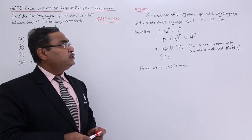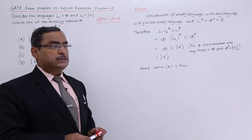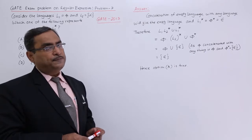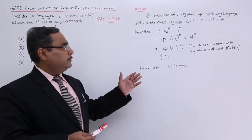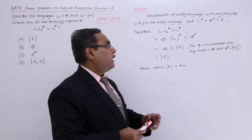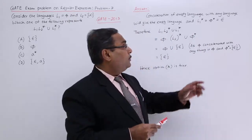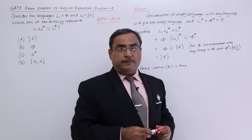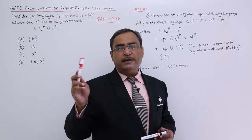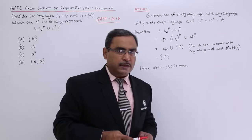Concatenation of empty language with any language will give you the empty language. That means L1 star is equal to phi star is equal to epsilon. In some other cases, we usually consider this epsilon as lambda, that is null. L1 star - what is L1? L1 is phi. What about L1 star? That is phi star. Phi star means epsilon plus phi plus phi phi and so on. Ultimately, I shall be landing with epsilon, which means null or lambda.